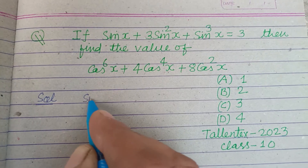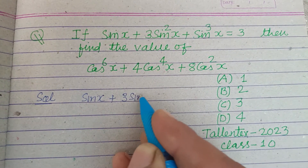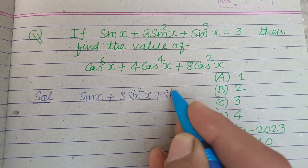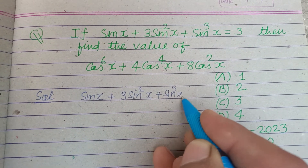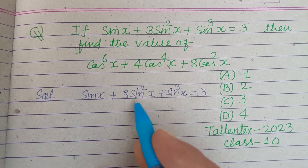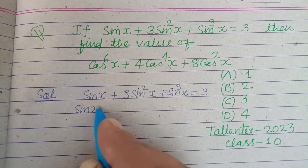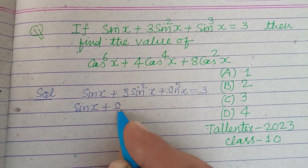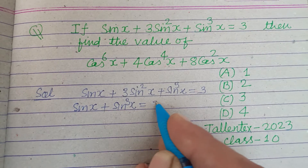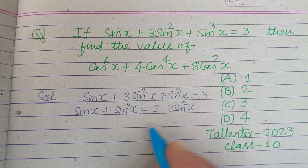First we take the given condition: sin x + 3sin²x + sin³x = 3. We bring the 3sin²x towards the right side, so this becomes sin x + sin³x = 3 - 3sin²x.